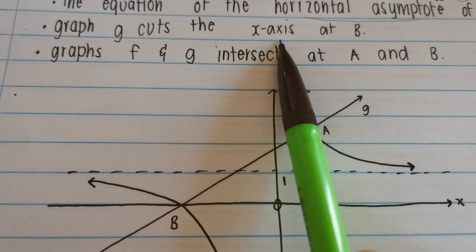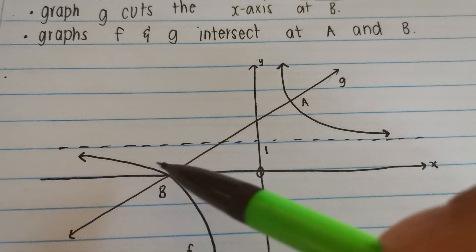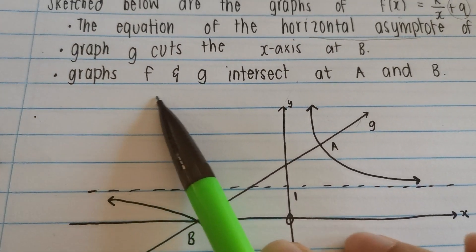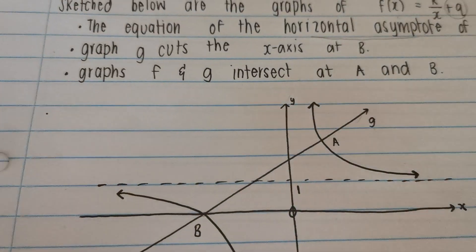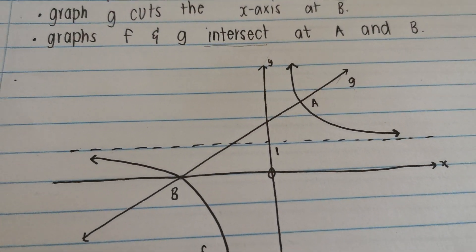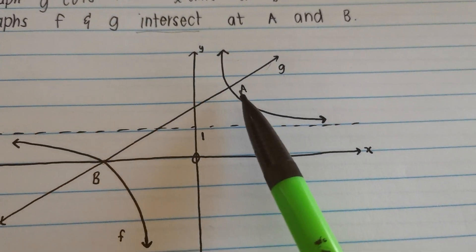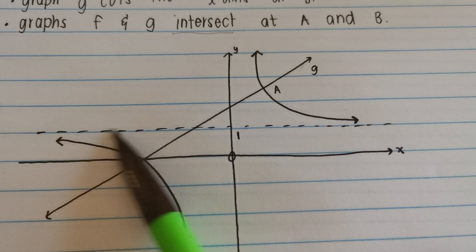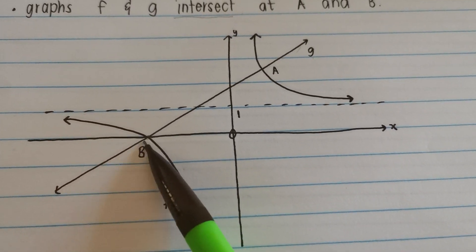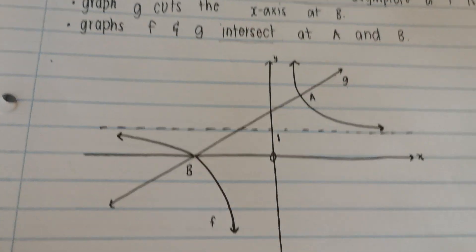Let's continue. It says graph G cuts the x-axis at B. There we see it, straight line cutting there. And it says graphs F and G intersect. What does the word intersect mean? It means that they meet in each other. They cut in each other at A and B. There we go. Point A, point B. So now we know that F also has an x-intercept at this point over here.